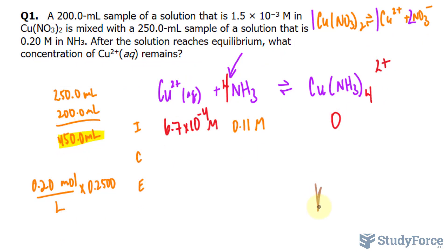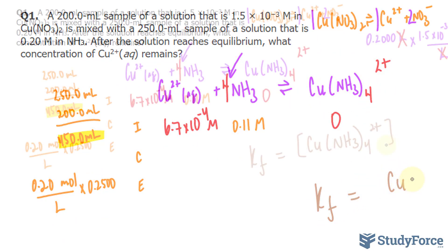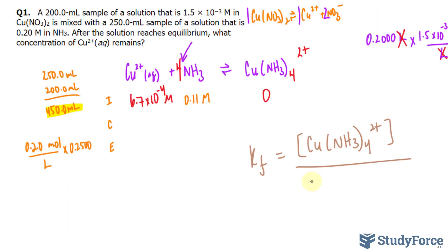So I'll write down K sub f for the constant of formation equals the concentration at equilibrium for this molecule over the concentration of these two molecules multiplied. And don't forget to raise this to the power of 4 because of this coefficient of 4.